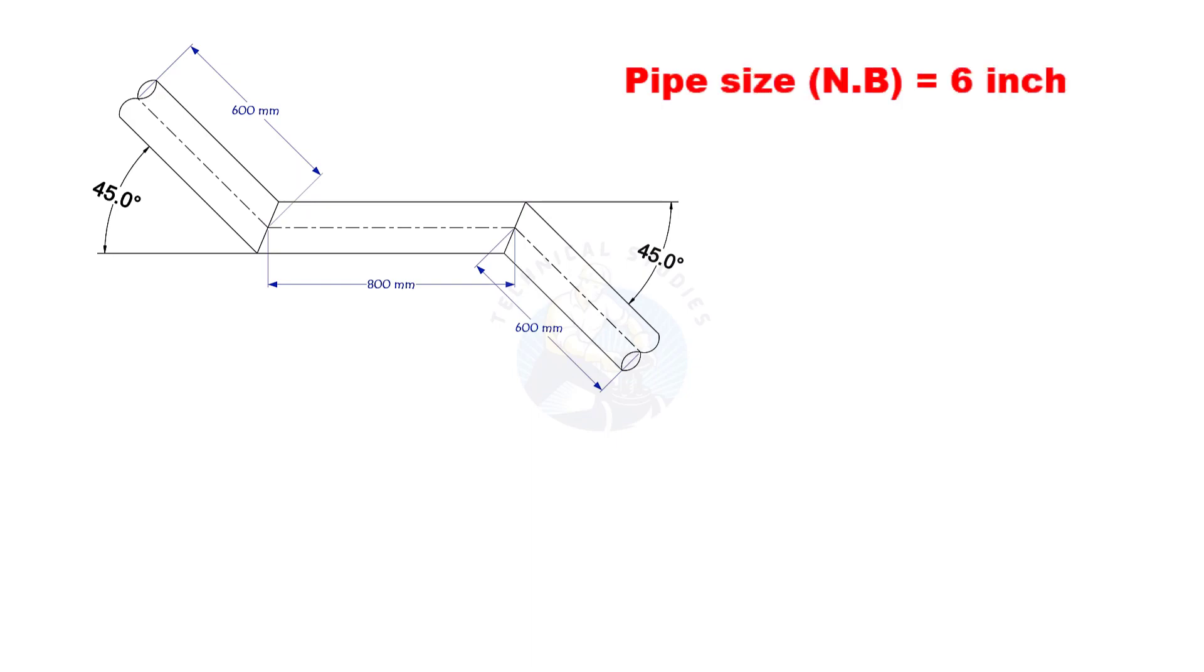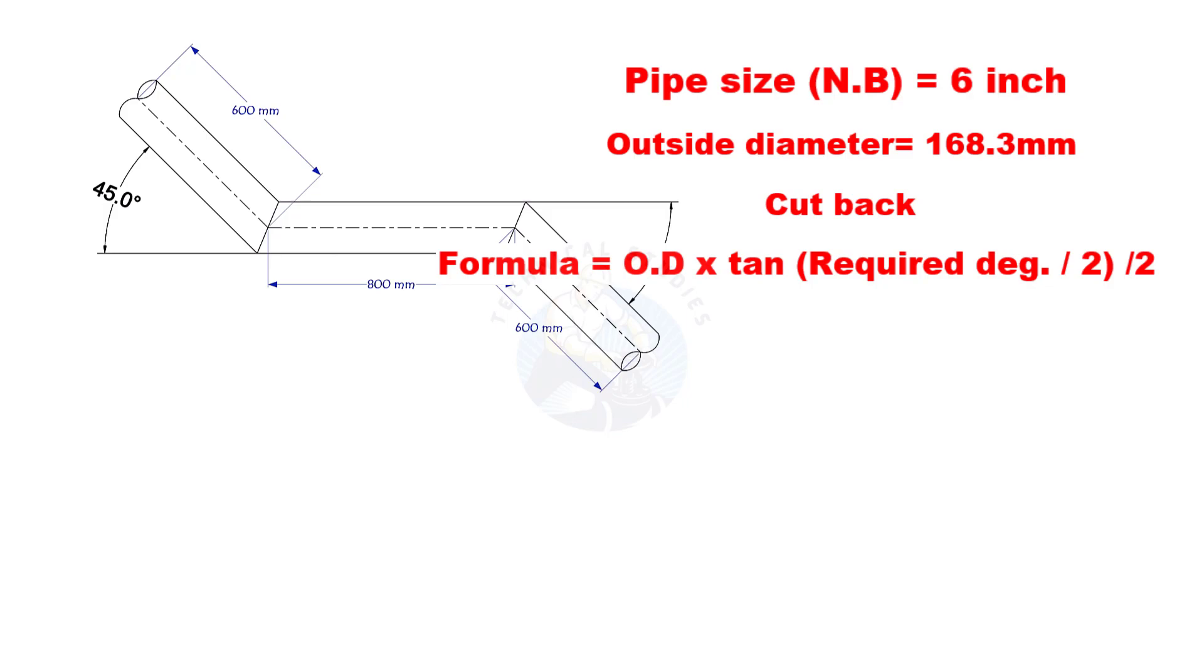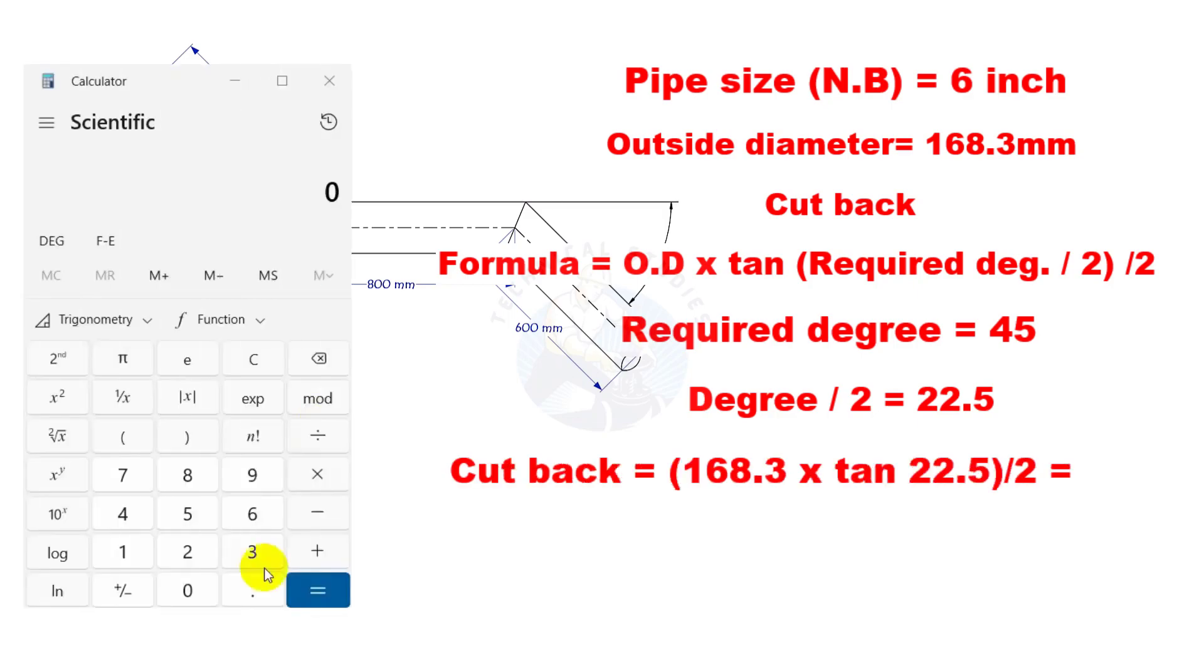The outside diameter of a 6 inch pipe is 168.3 millimeters. Cutback is O D multiplied by tan half degree, divided by 2. Here, the required degree is 45. Half of 45 is 22.5. The cutback is nearly 35 millimeters.